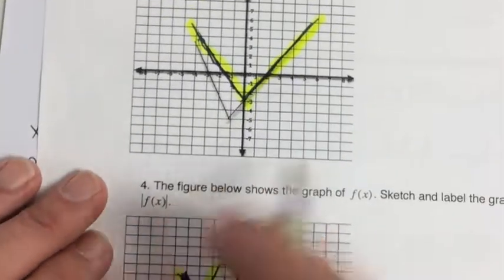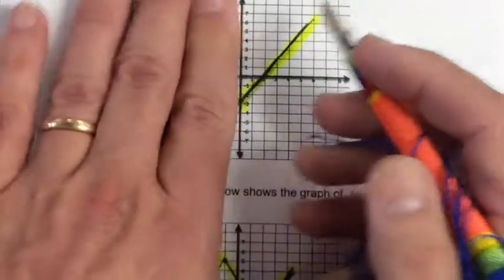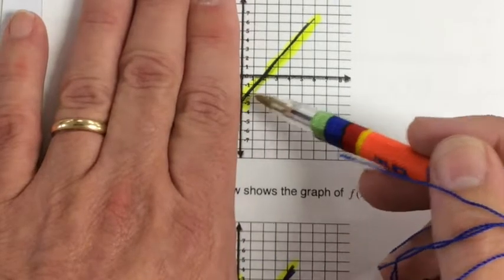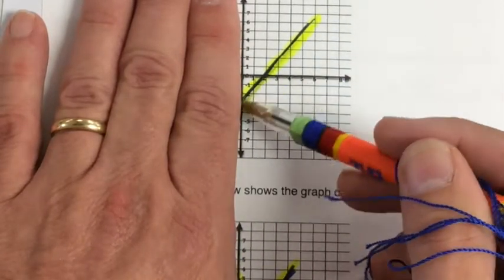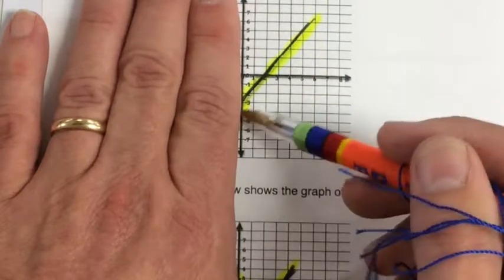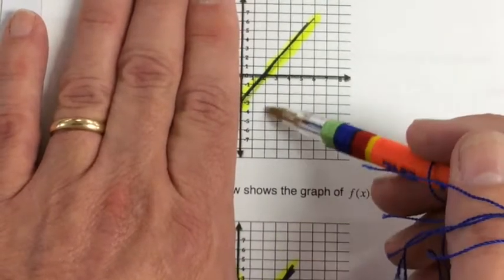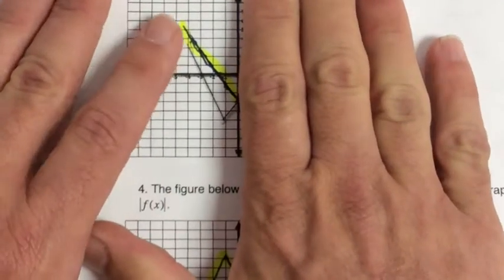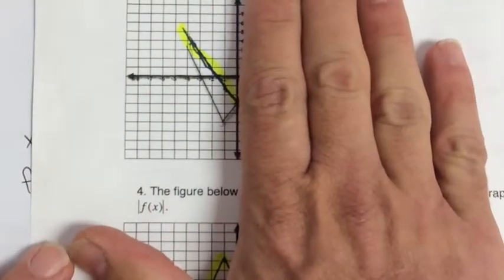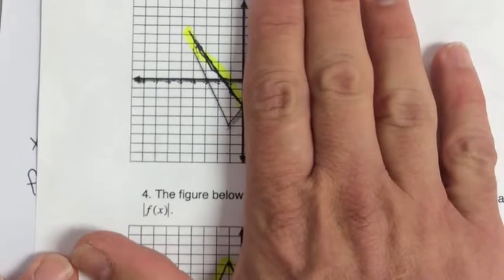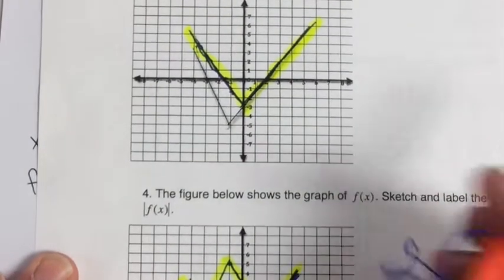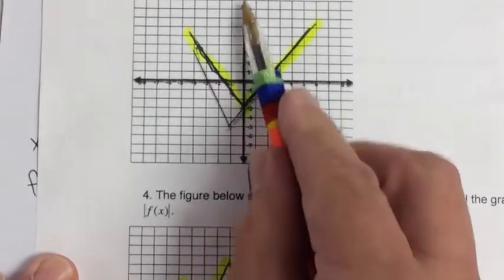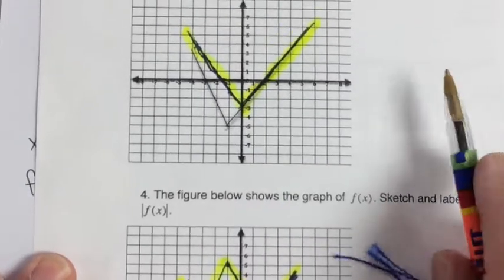So here, when you're looking at this, when x is greater than or equal to 0, the graph of f of the absolute value of x will be the same as f of x. Here, it's going to be the same as f of negative x, which makes it a reflection of this across the y-axis.